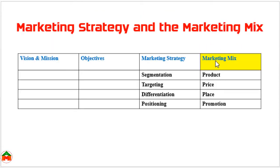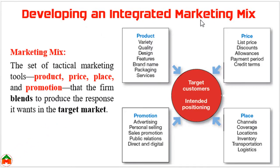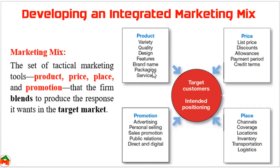Now we discuss the marketing mix, also known as the 4Ps: Product, Price, Promotion, and Place. These 4Ps are considered a set of tactical marketing tools. Marketers should blend these four elements to produce the response they want in the target market. In product strategy, a company can apply strategies like ensuring variety, quality, design, features, brand name, packaging, and services to capture the target market.